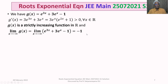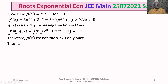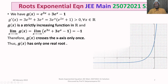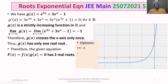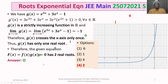Since g(x) is strictly increasing and starts from -1 as x → -∞, it crosses the x-axis exactly once. Thus g(x) has only one real root. Therefore, the given equation F(x) = f(x)·g(x) = 0 has exactly two real roots. This corresponds to option 4.